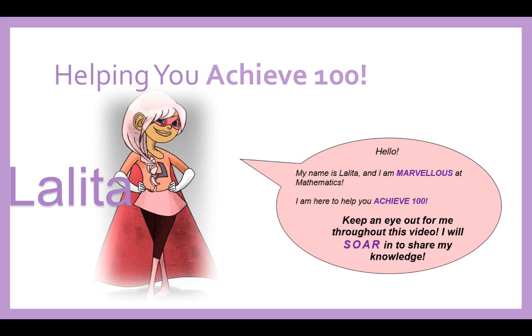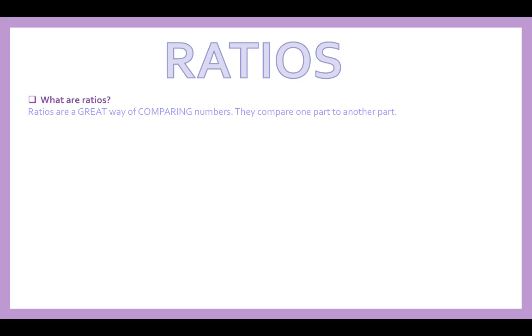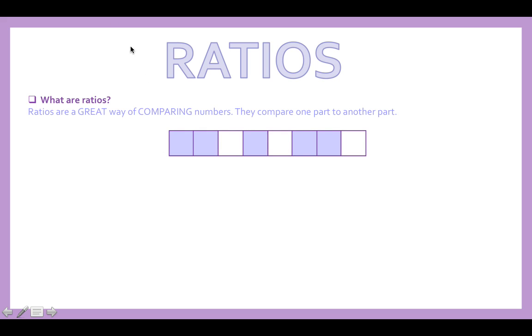She's going to soar through this video and help you with some of the questions. So, ratio. What are ratios? Well, they're a great way of comparing numbers — they compare one part to another part. Here we've got eight squares, and as you can see, five of the squares are shaded in and three of the squares are not.